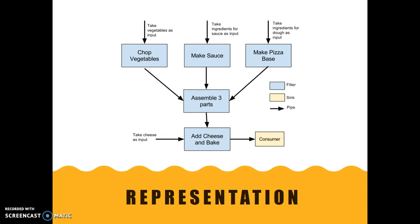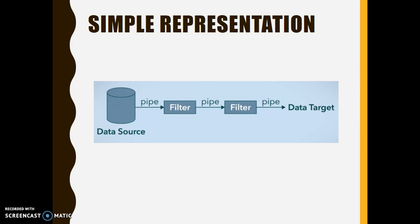Now let's look at a representation which is basically the one being used by people in the computing discipline. This is a simple representation of the architecture. We have the data source, you can see different pipes, you can see different filters, and then we have the data target. In this diagram, the data would always come from the data source and then pass through the different filters with the help of the different pipes which connect the filters.